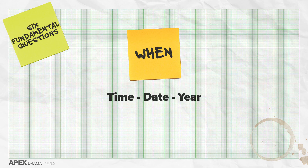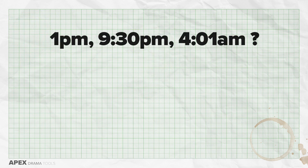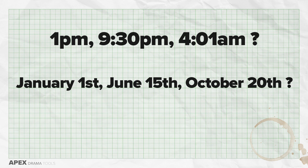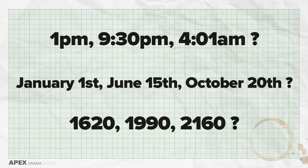When is our third question — essentially time, date and year. What time is this scene taking place? Is it 1pm, 9.30pm or 4.01am? What's the date? Is it January 1st, June 15th or October 20th? And finally, what year is it? Are we in 1620, 1990 or 2160?